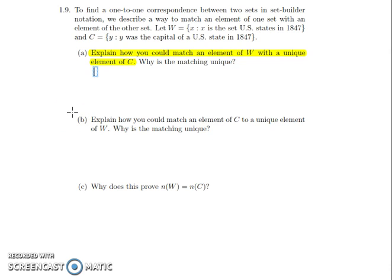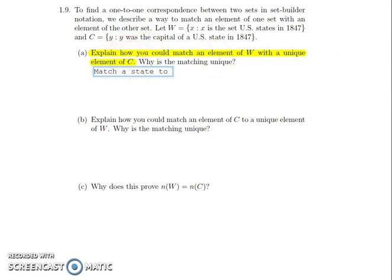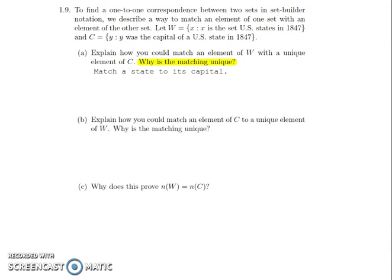Paper is cheap — it doesn't hurt to write something. I want to match an element of W, which is the set of states, to a unique element of C, the capitals. Once I have a state, which capital should I match it to? If I can explain which capital, that answers the question 'how.' How about matching a state to its own capital? There's the first part of the question. Now let's explain why that matching is unique — I need to make sure there's only one capital a state is going to be matched to.